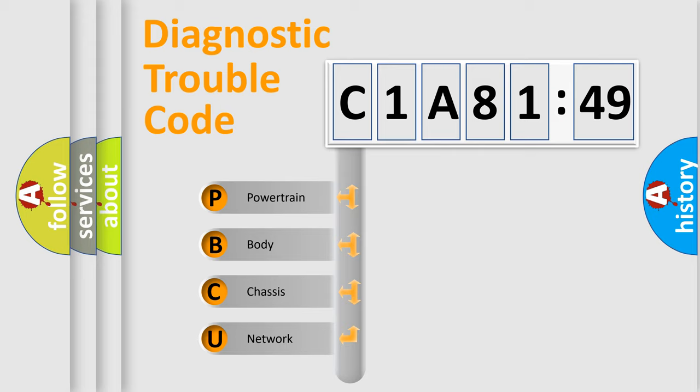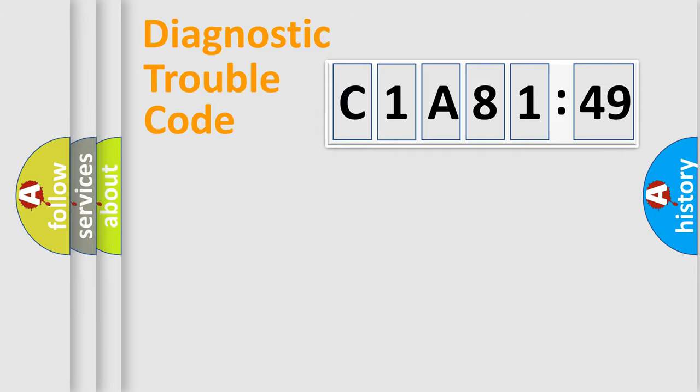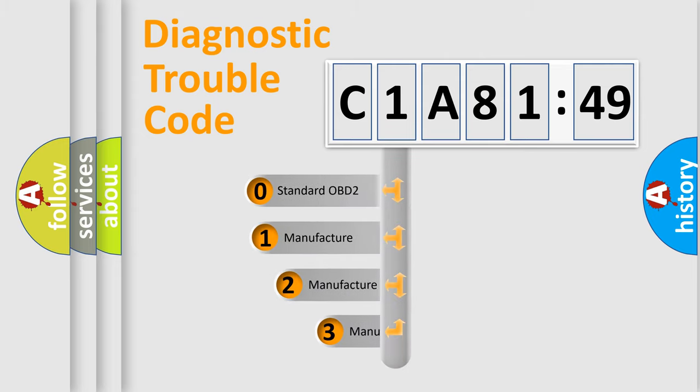We divide the electric system of automobile into four basic units: powertrain, body, chassis, and network. This distribution is defined in the first character code.